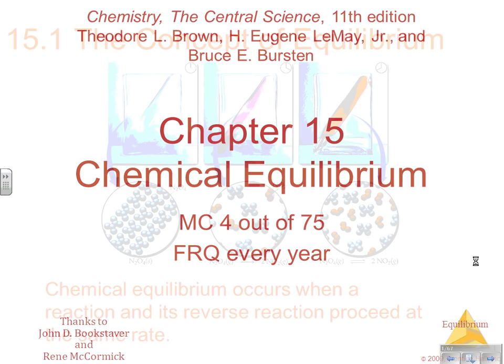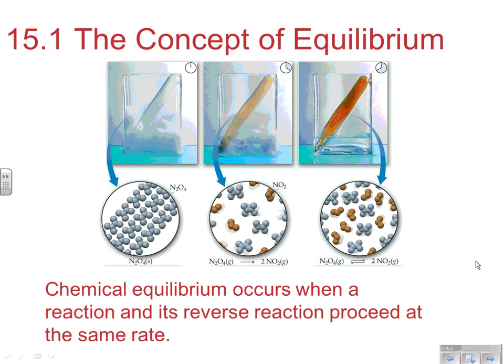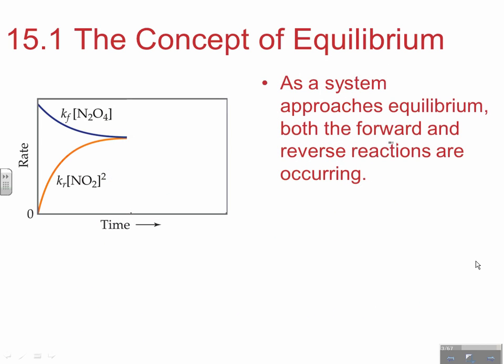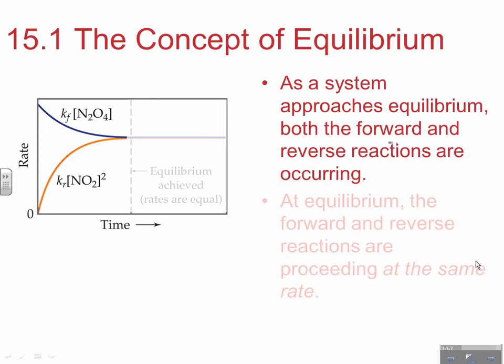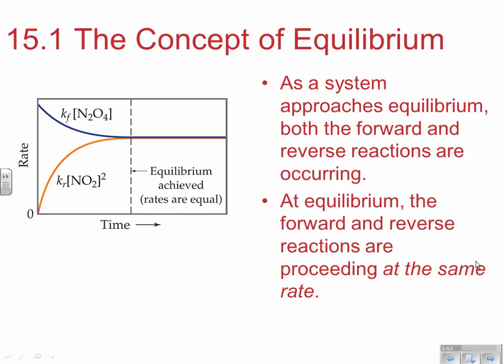A chemical equilibrium occurs when a reaction and its reverse reaction proceed at the same rate. In the reaction system between N2O4 and the brown gas NO2, in a sealed system, eventually the rates of the forward and reverse reactions become equal, and at that point we are at chemical equilibrium. As a system approaches equilibrium, both the forward and reverse reactions are occurring. At equilibrium, the forward and reverse reactions proceed at the exact same rate.